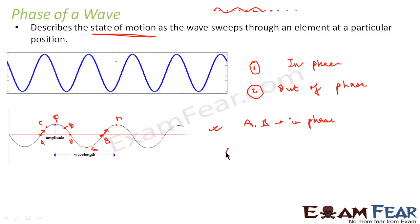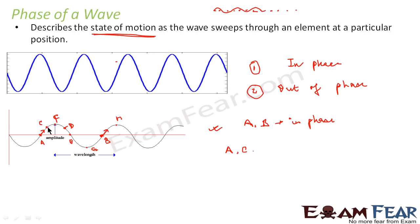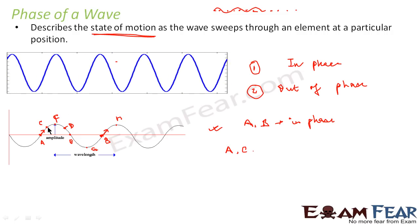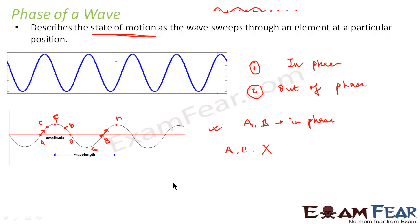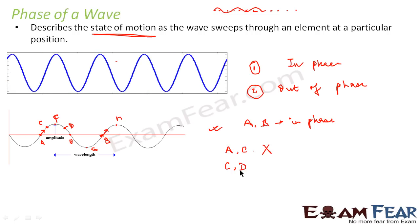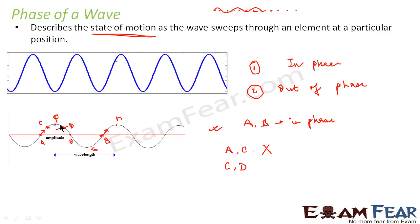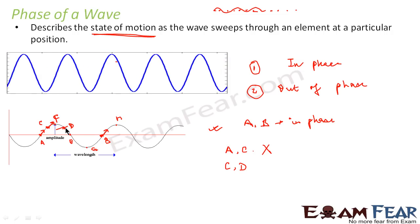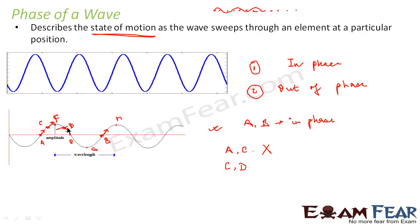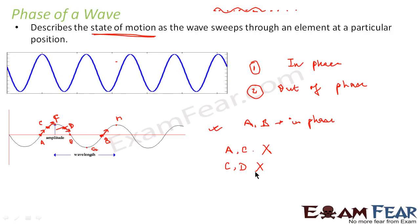Now if we consider points A and C, are they at similar positions? No, they are not — the position itself is not similar, so we say they are not in phase. Similarly, if we compare points C and D, as far as position is concerned they are both at the same position. But the behavior at point C is that the particle is tending to go up, whereas at point D the particle tends to come down. So the behavior is different at these two points, and therefore C and D are also not in phase.